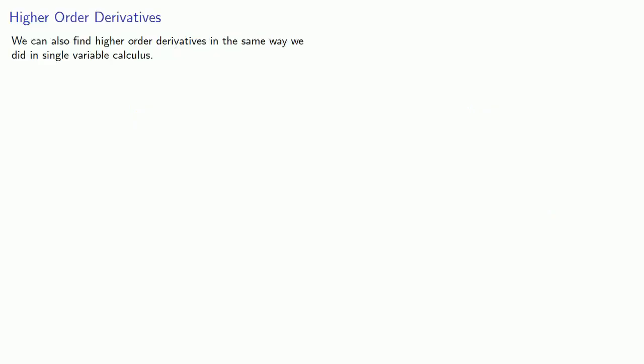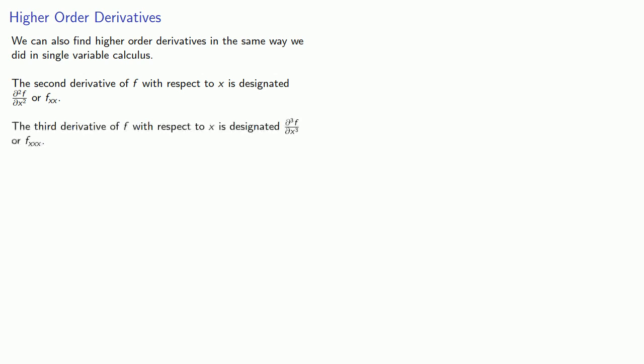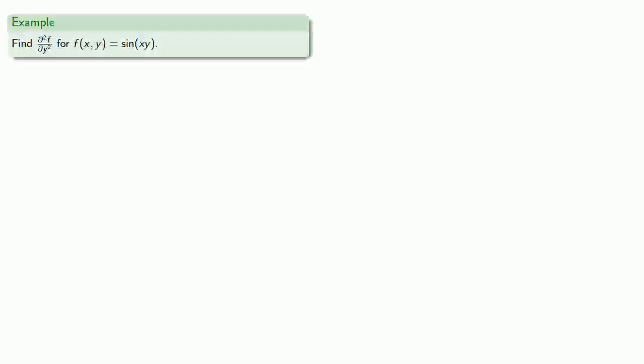We can find higher-order derivatives in the same way we did in single-variable calculus. The second derivative of f with respect to x is designated this way, or f_xx. The third derivative is designated this way, or f_xxx. The fourth derivative of f with respect to x is written the way you would pretty much expect. The only thing we have to keep track of is remembering which is the variable and which is constant — if it's not the variable we're differentiating with respect to, we treat it as a constant. So here we want to find the second derivative with respect to y of the function sin(xy).